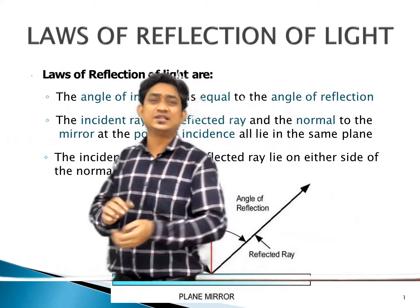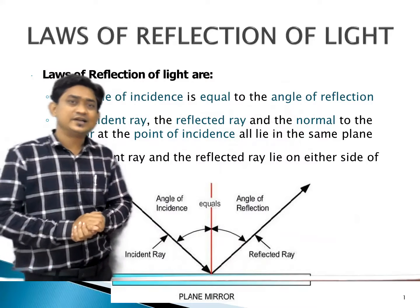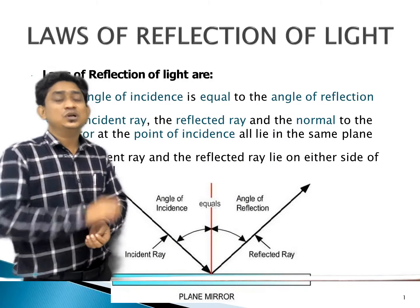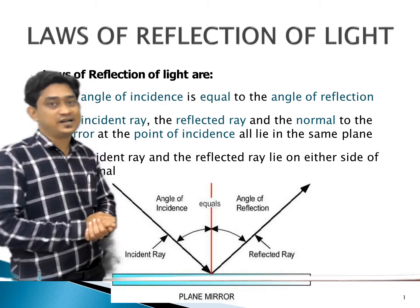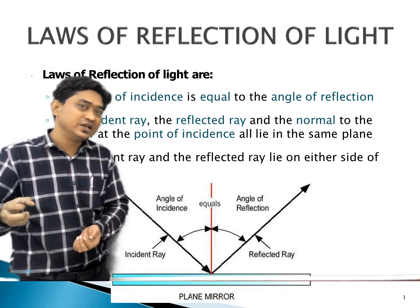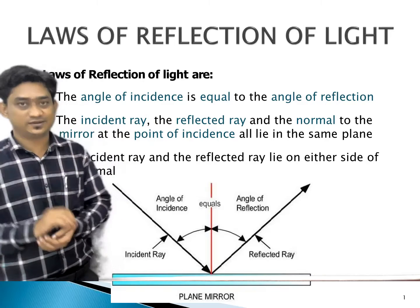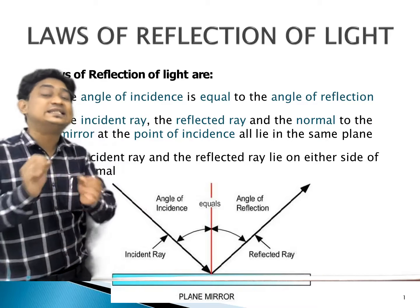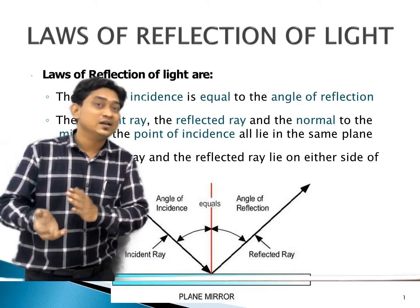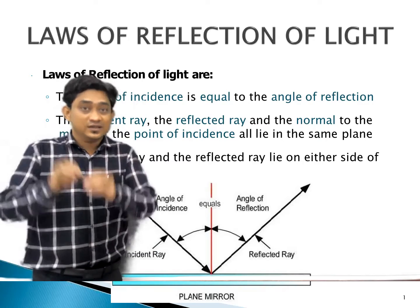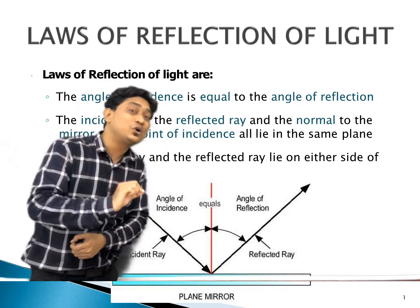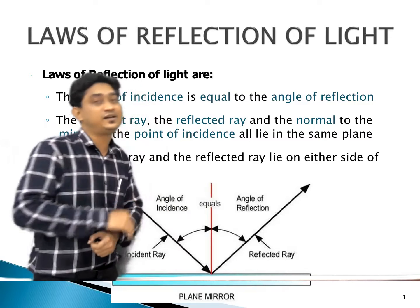Some important definitions are here. Let us examine the ray diagram which is given. What is the incident ray? Any ray of light coming from the object and falling on the mirror is called the incident ray. Next, what happens under reflection of light? Some light is sent back by the mirror, and this ray is called the reflected ray.